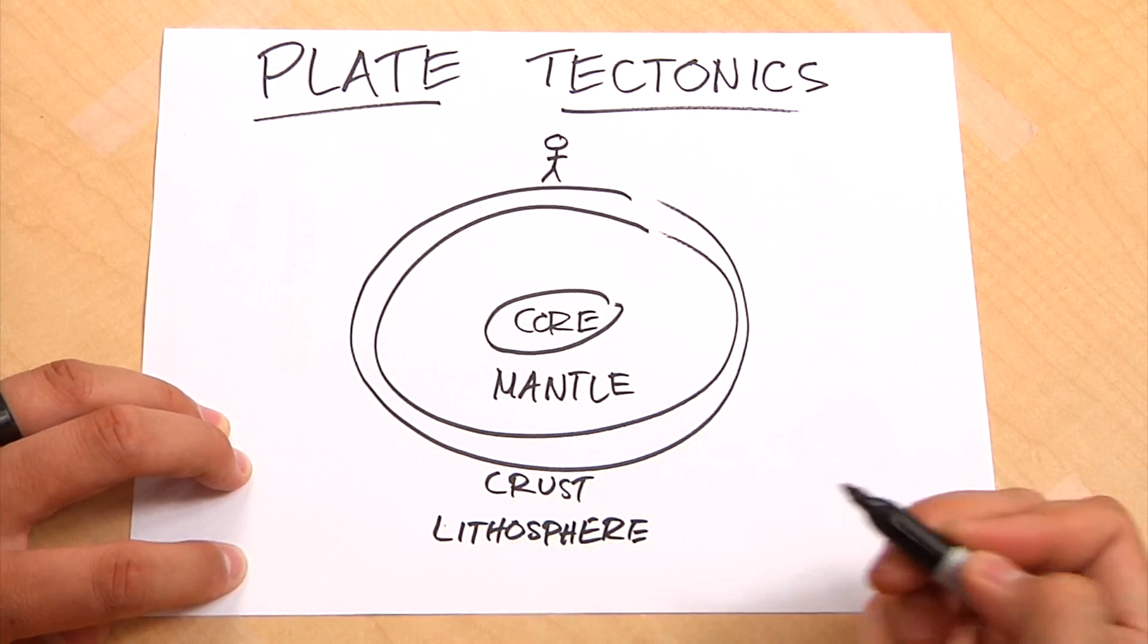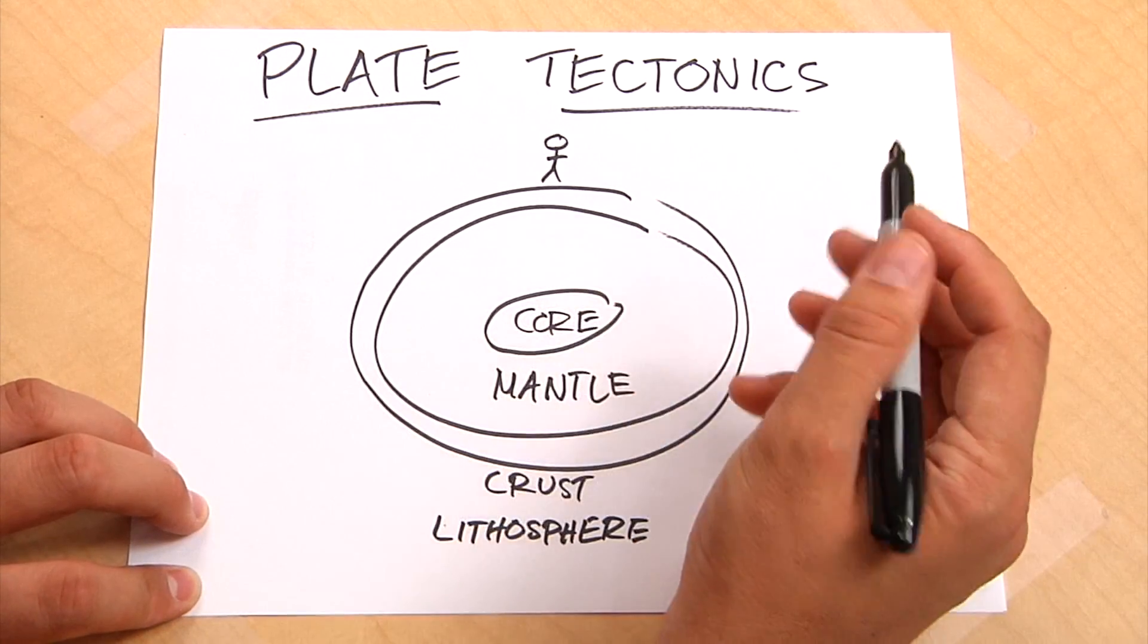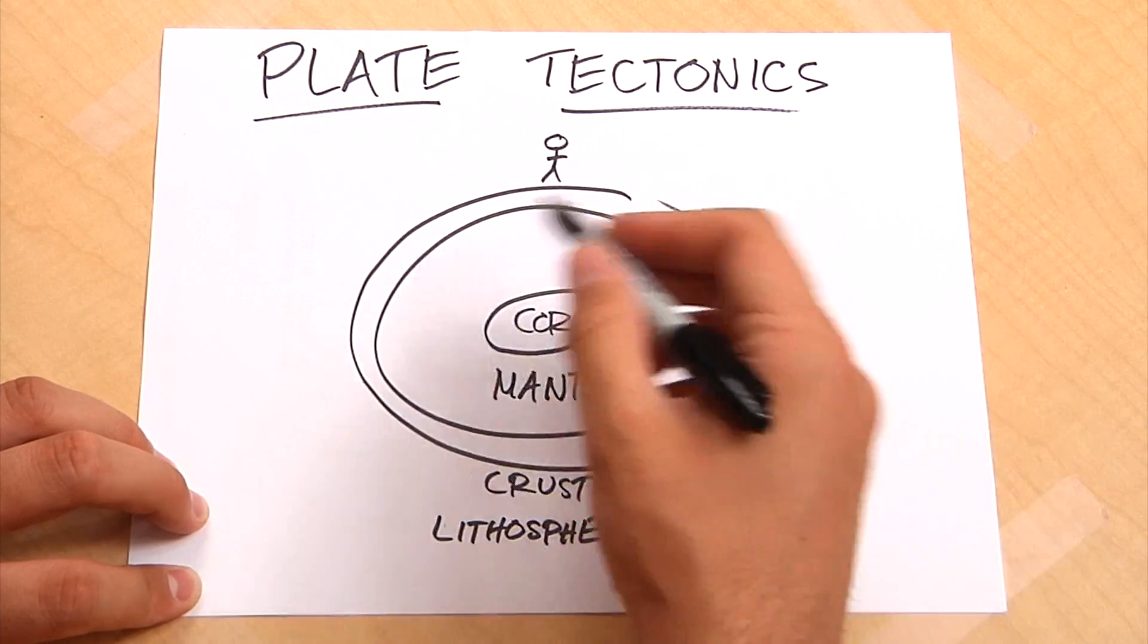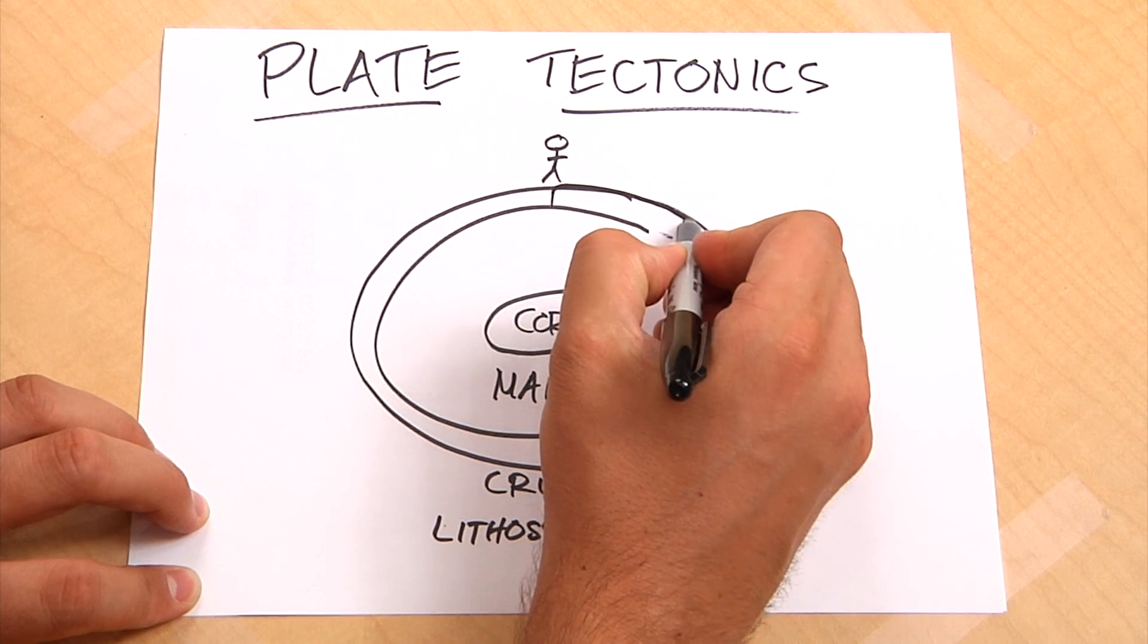Lithosphere is a fancy Greek word that means a rock sphere. Lithos means rock. So it's the hard, rocky outer part of the Earth. And the lithosphere, or the crust, is not just made of one big piece, but it's actually made of plates.